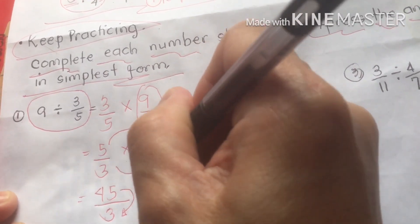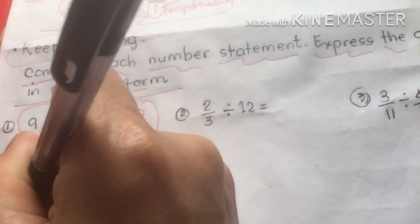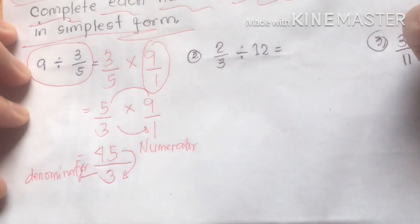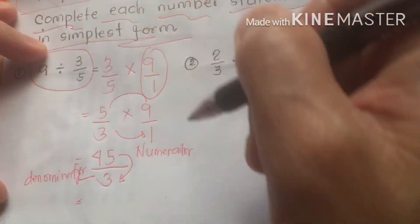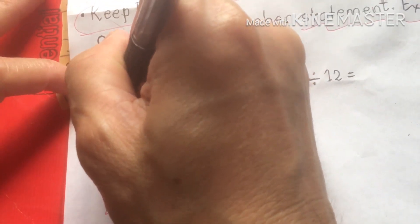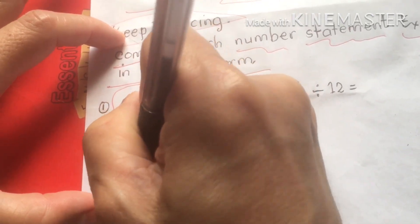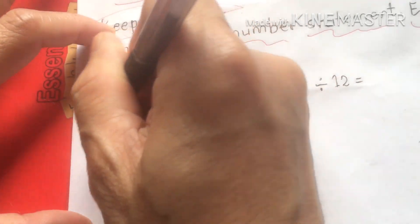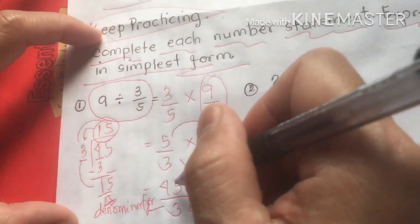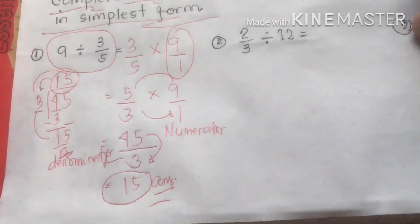Now we simplify 45 over three. Our numerator is 45 and our denominator is three. We divide 45 by three: four divided by three is one, bring down five, making 15. Fifteen divided by three is five, and five times three is 15. So our answer for number one is 15.